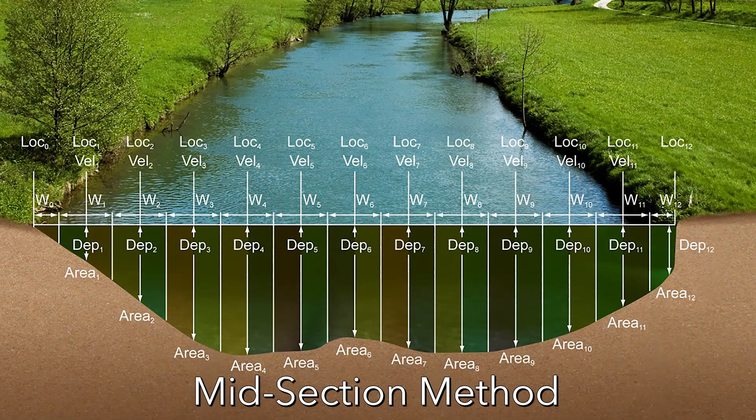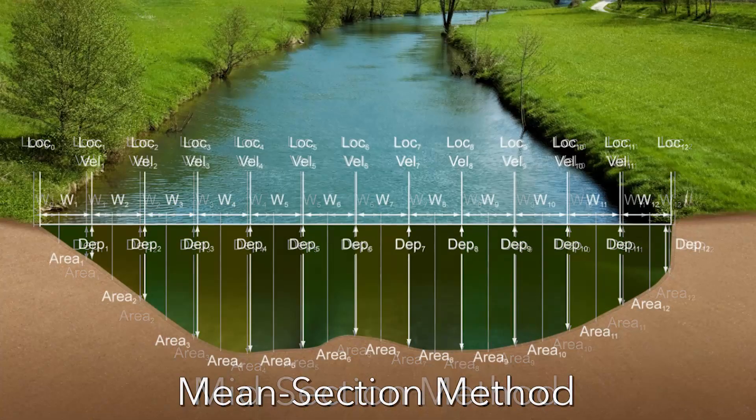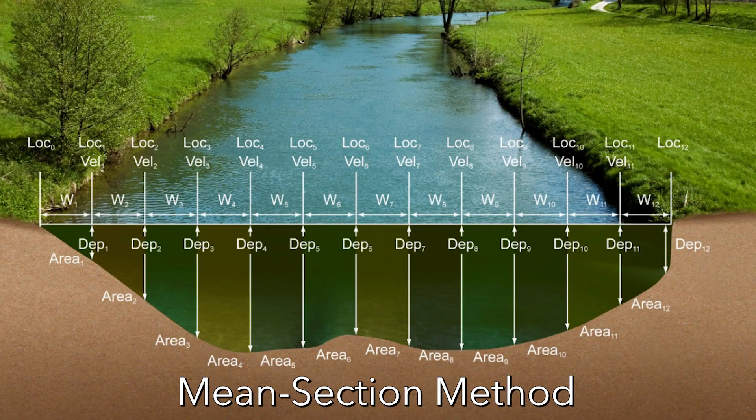Before we begin the measurement, let's briefly review the measurement concept. We will be going from one bank to the other, taking measurements along the way. We'll be dividing the entire measurement section into discrete sections, also called verticals, measuring the depth and the width of each vertical in order to calculate the cross-sectional area.